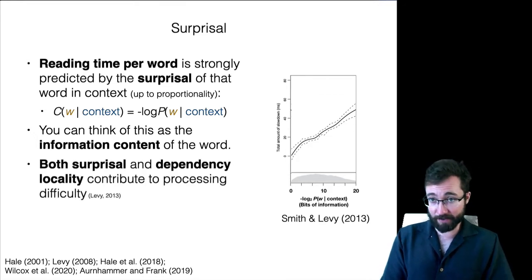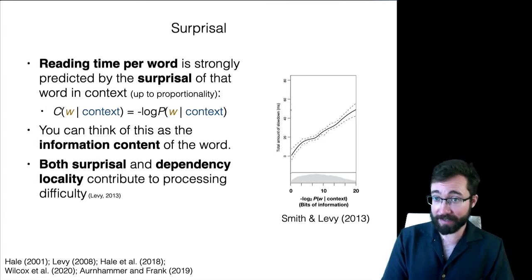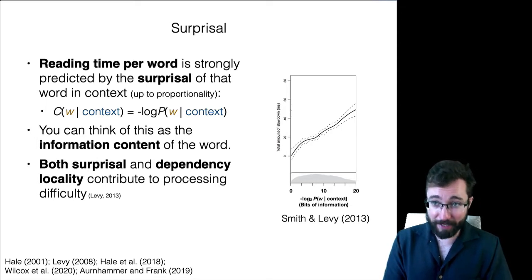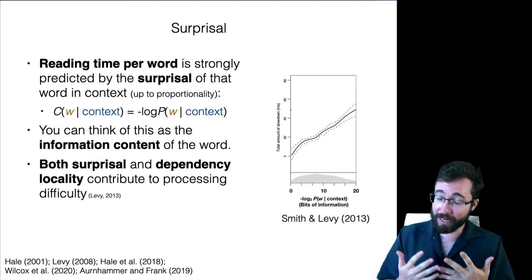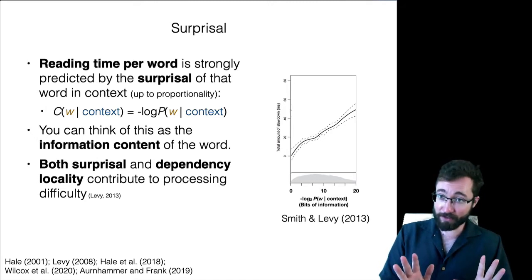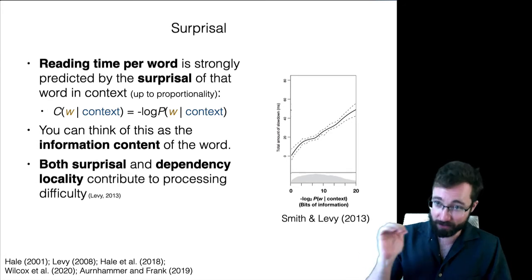Both surprisal and dependency locality contribute to processing difficulty as measured in things like reading times. Surprisal on its own does not account for these dependency locality effects, because those dependency locality effects depend on memory, and there's nothing in surprisal about memory. Surprisal is about expectation — how much you predict the upcoming words. It's forward looking. Dependency locality is based on memory. It's backwards looking — it's about how you retrieve information about the past.